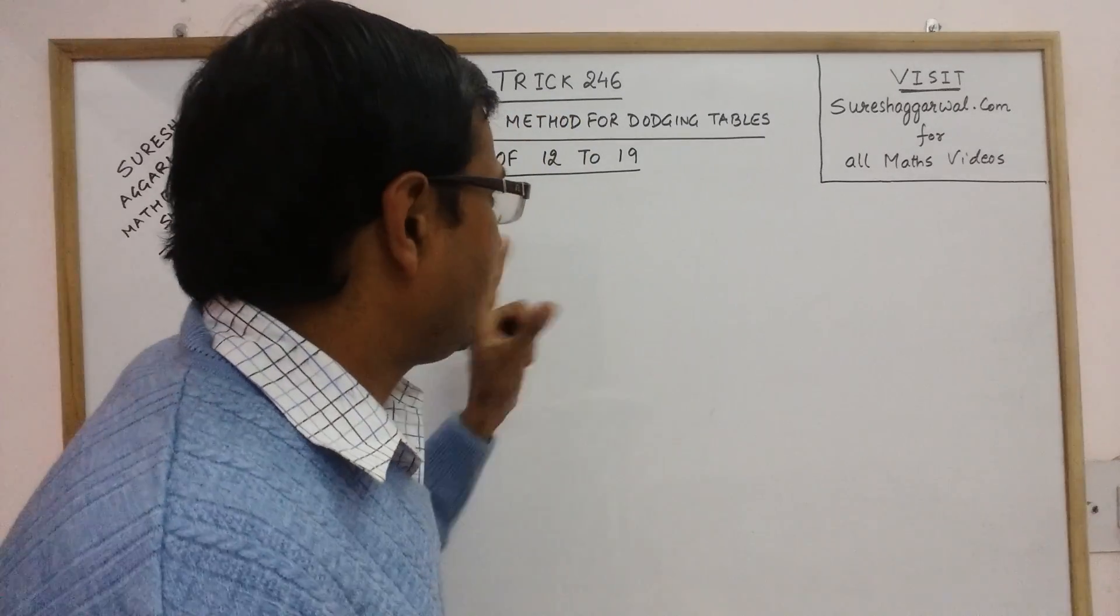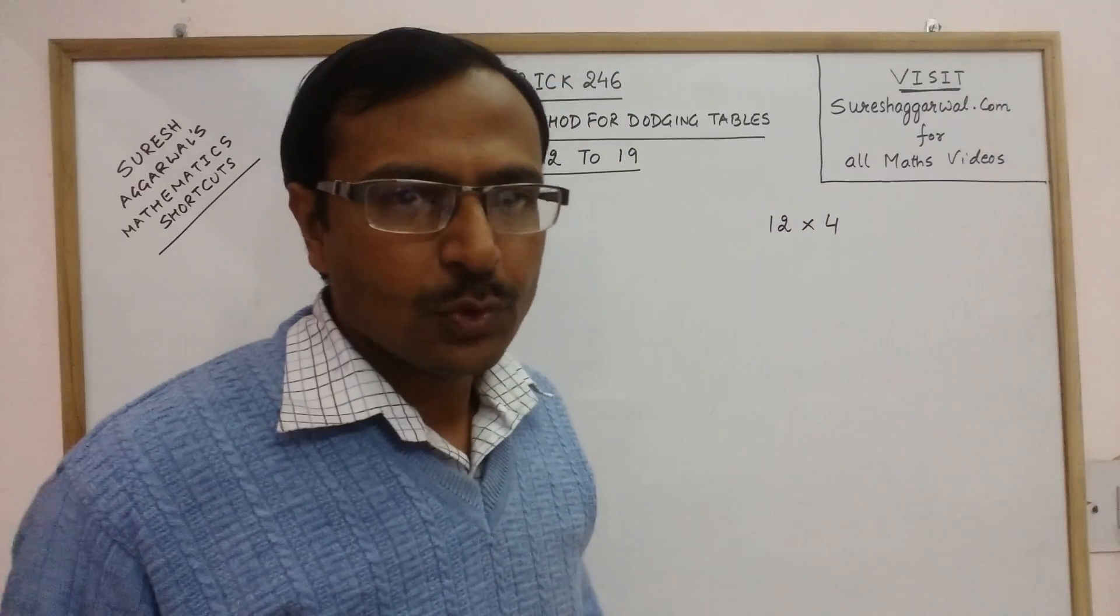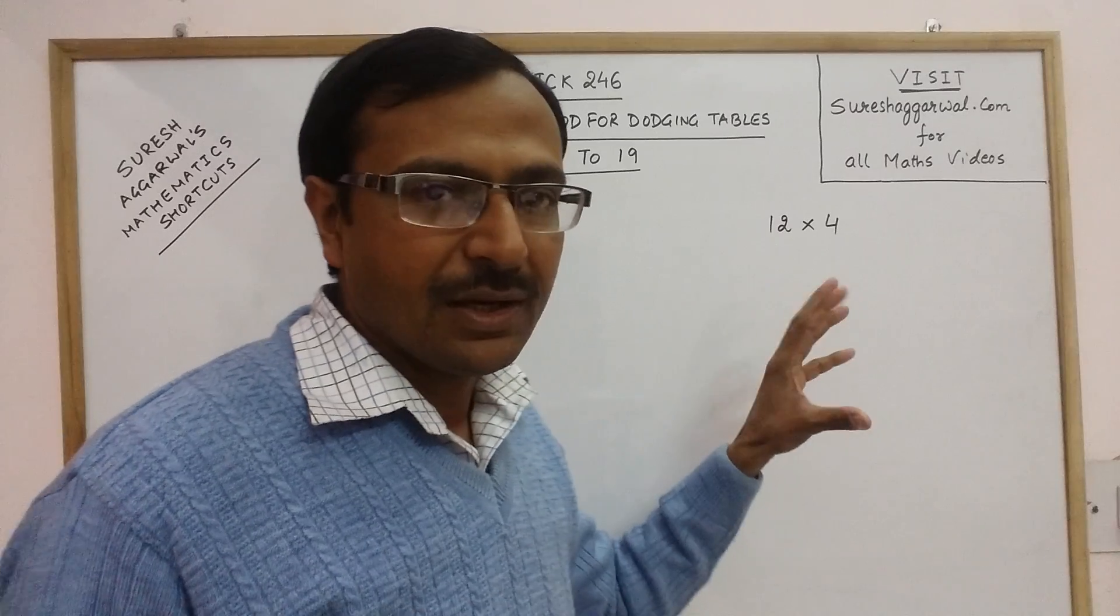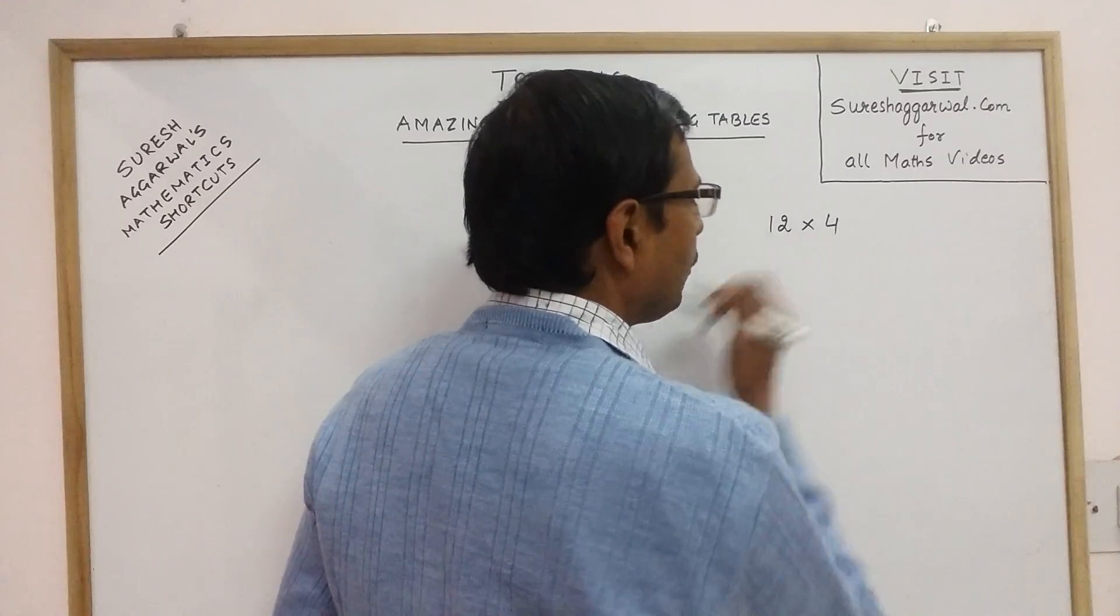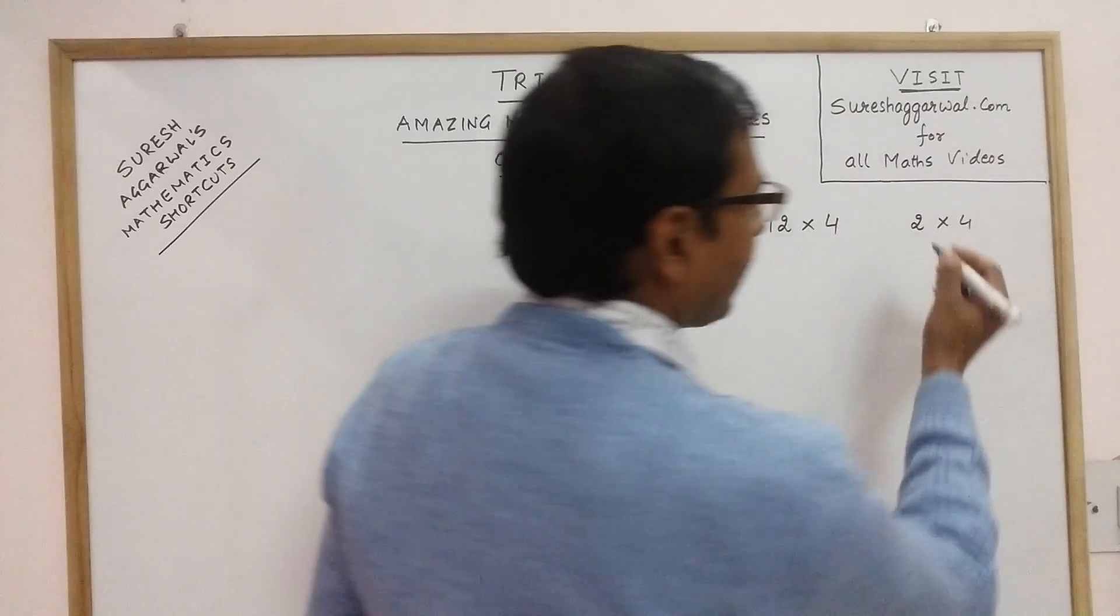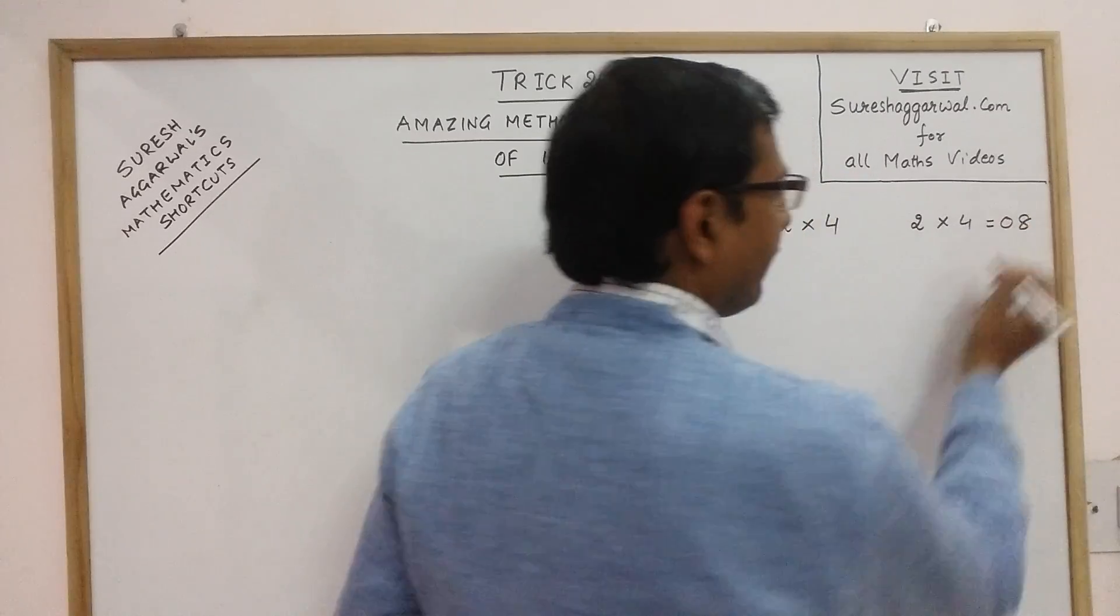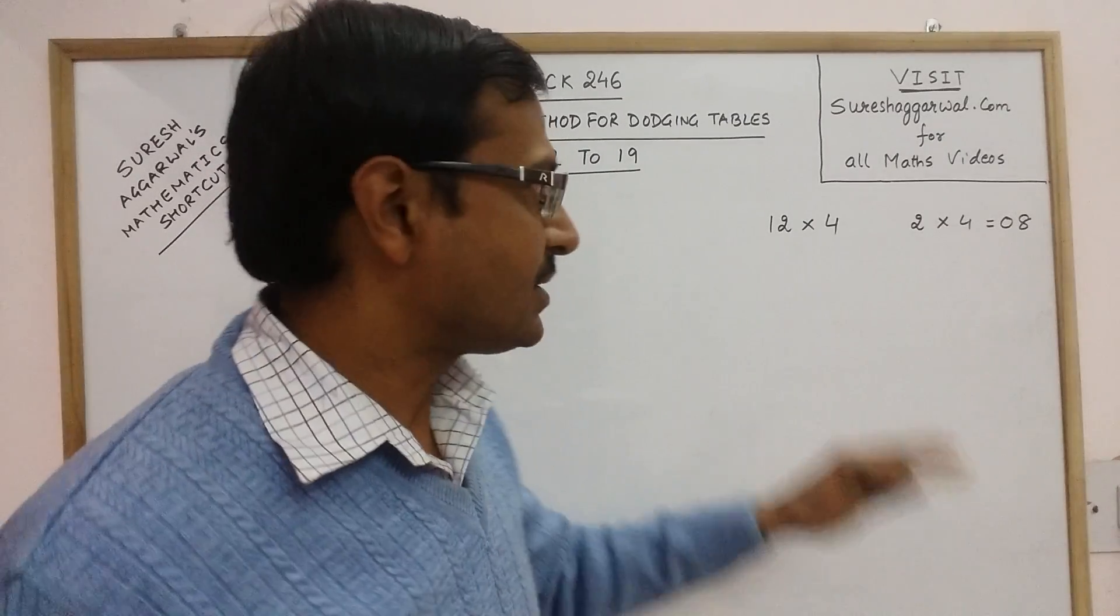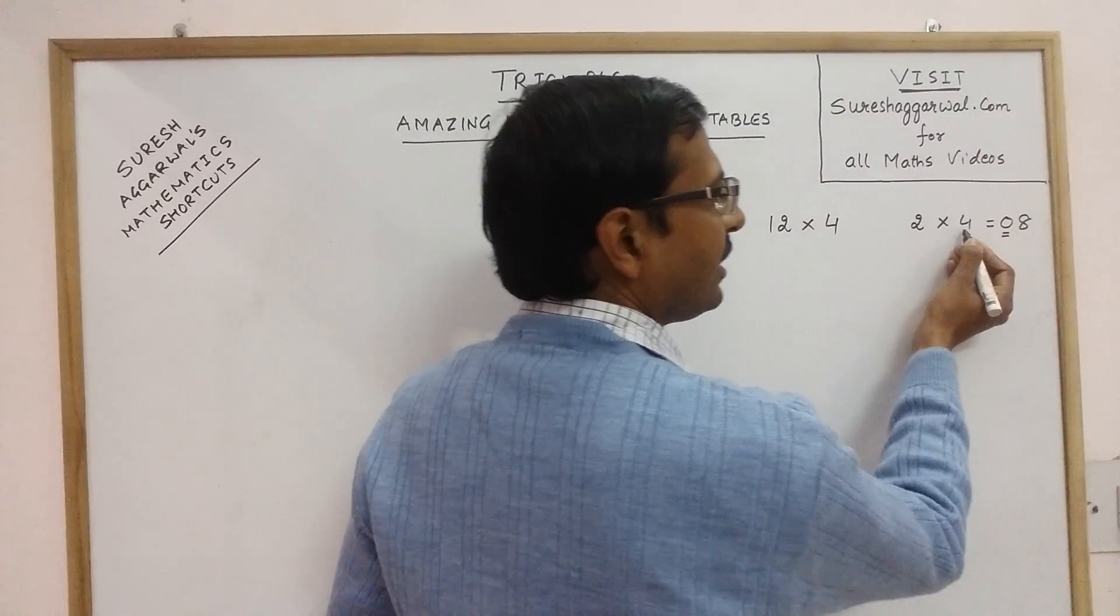Now see I am taking up first 12 into 4. Students are mostly comfortable writing the tables of single digit numbers. When it comes to double digit numbers they feel little bit difficulty. So now instead of writing 12 into 4, students can be told to write 2 into 4 and whatever product they obtain they must write it in 2 digit numbers. So if 2 into 4 is 8 then they have to write it as 08. And now in the next step they have the answer of 12 into 4. The in between numbers, this is the first number, second, third and fourth.